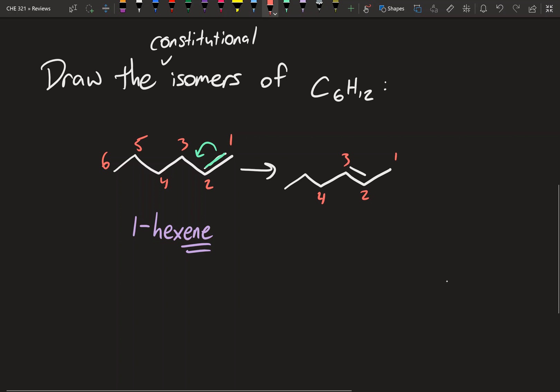So I'm going to number this again. And this is now, because we want to number it in the lowest carbon count, it's going to be 2-hexene. All right, again, the ene, because it's an alkene. So that's a second constitutional isomer.